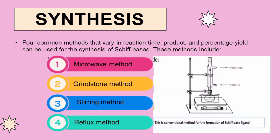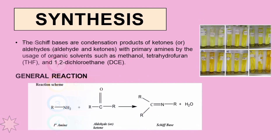The fourth method is the reflux method, a conventional method for the formation of Schiff base ligands and an effective method for the preparation of ligands. Schiff bases are condensation products of ketones and aldehydes with primary amines using organic solvents such as ethanol, methanol, tetrahydrofuran, and 1,2-dichloroethane. In the general reaction, primary amines react with any aldehyde or ketone to give the Schiff base, with H2O produced as a byproduct.